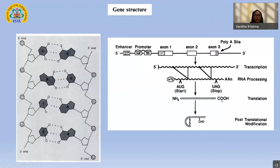Before dwelling into the entire process of RDT, we should understand how exactly our DNA is formed and how a gene is expressed and converted into a protein. The left panel shows DNA — it is double helix, helical in nature, with two strands running anti-parallel to each other: one running from 5' to 3' and the other in the opposite direction. Both strands are held together by basic units called nucleotides. In the backbone of the strands we have a sugar — deoxyribose if it is DNA, ribose if it is RNA — and a phosphate group.